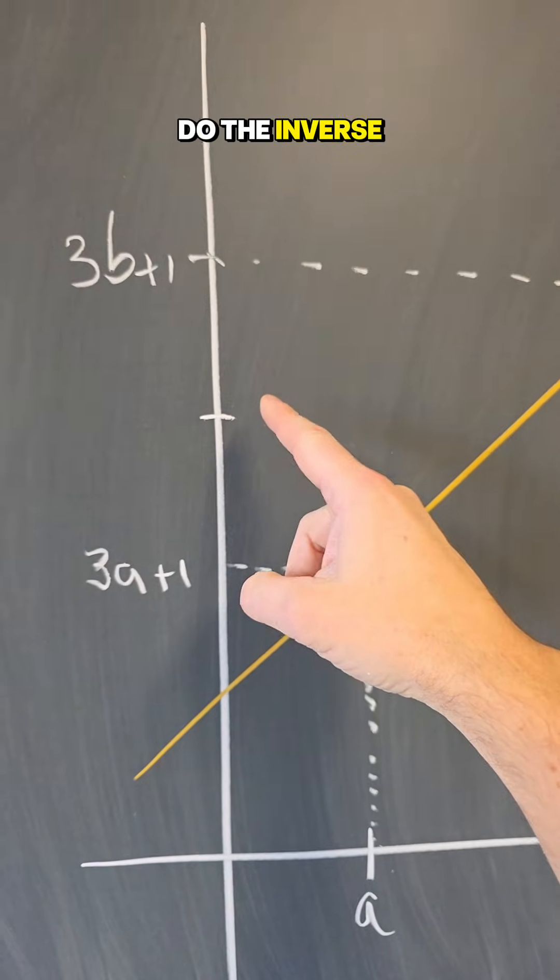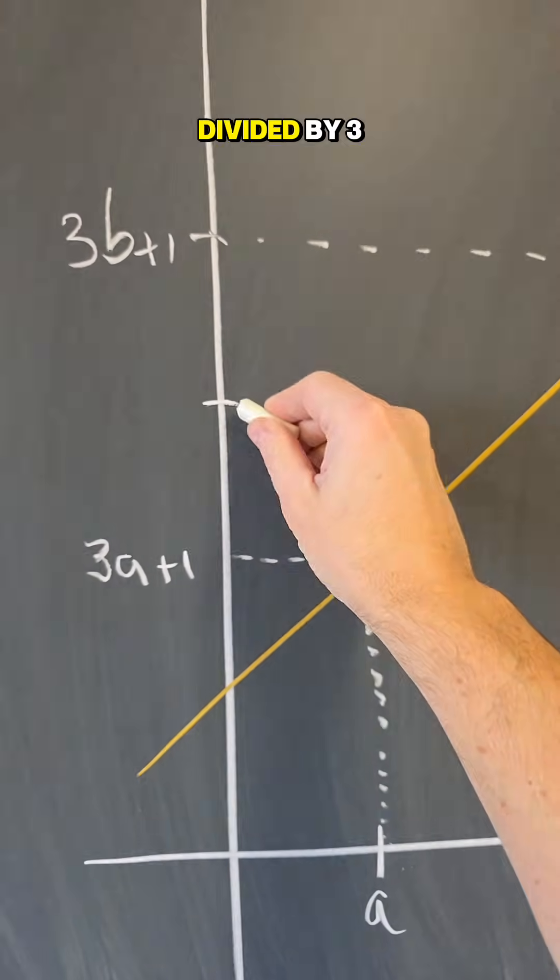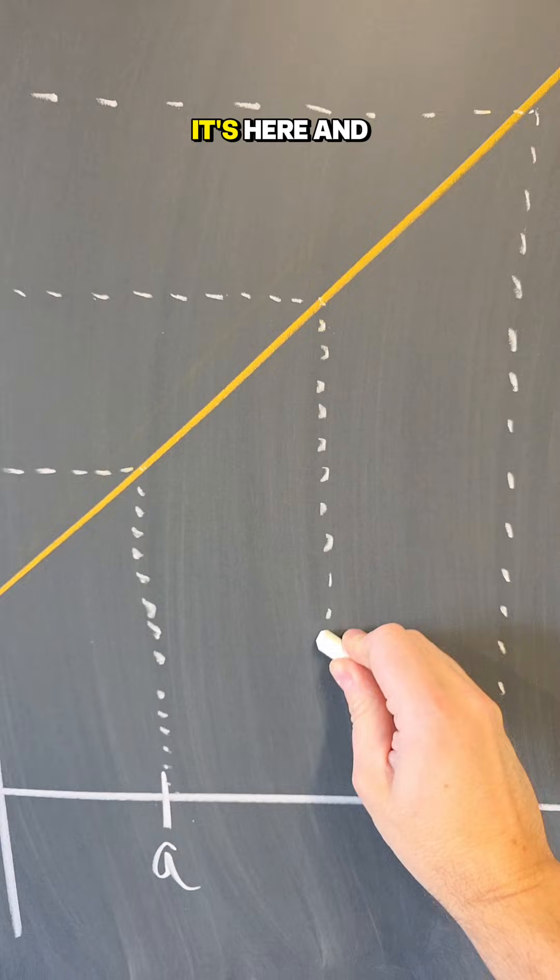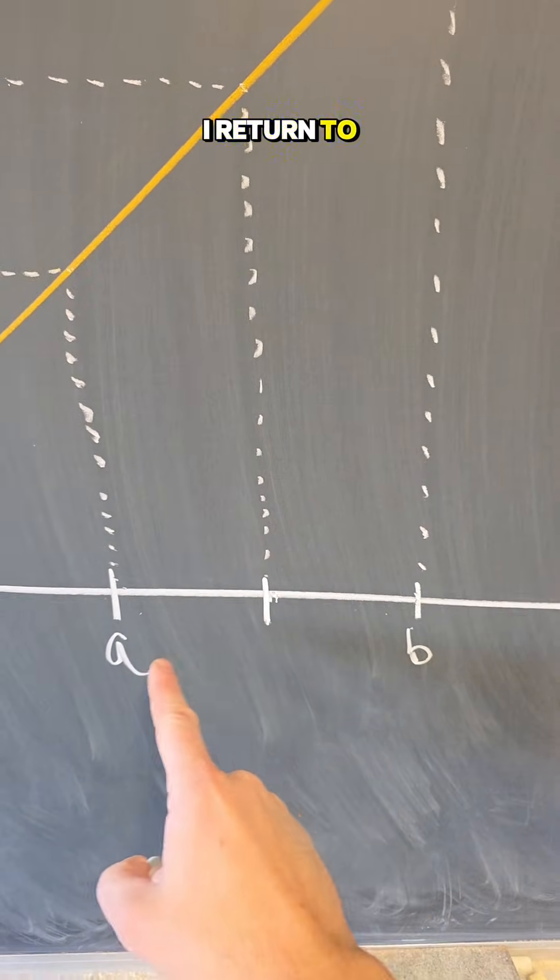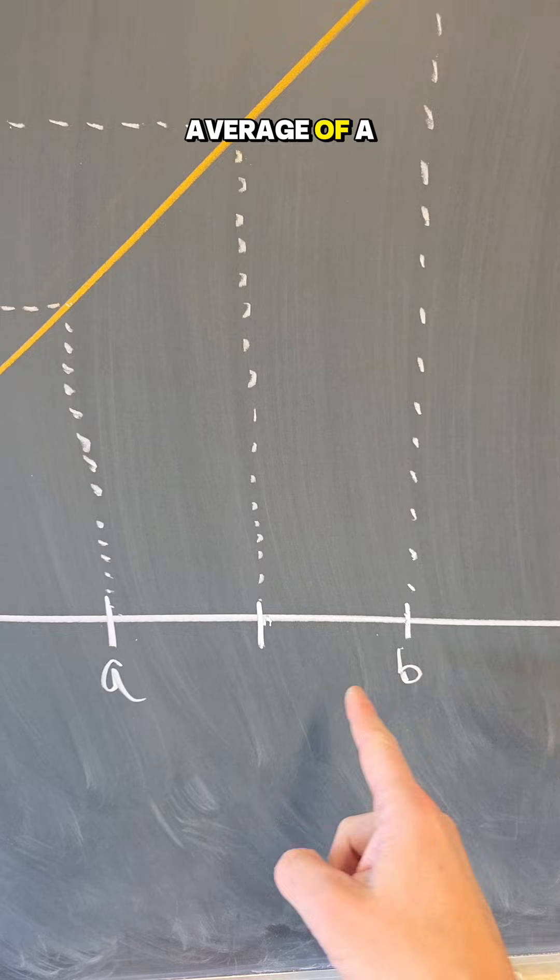And then do the inverse, which is Y minus 1 divided by 3, but it's just visually, it's here. And you see that I return to the point that is the average of A and B. So it works in this case as expected.